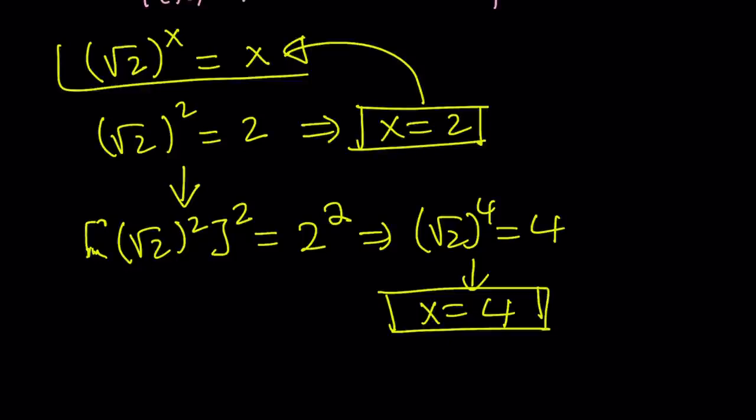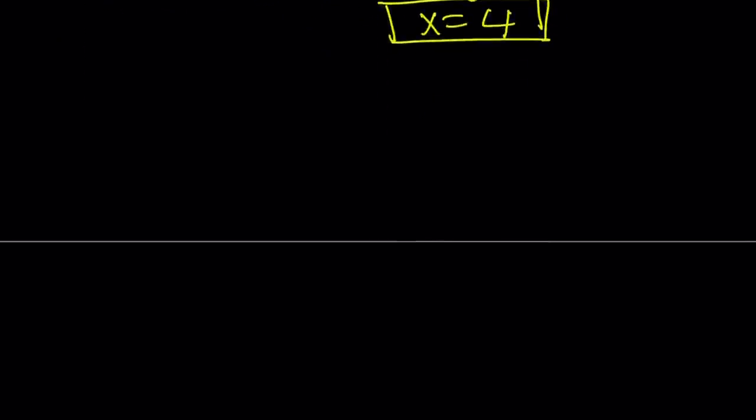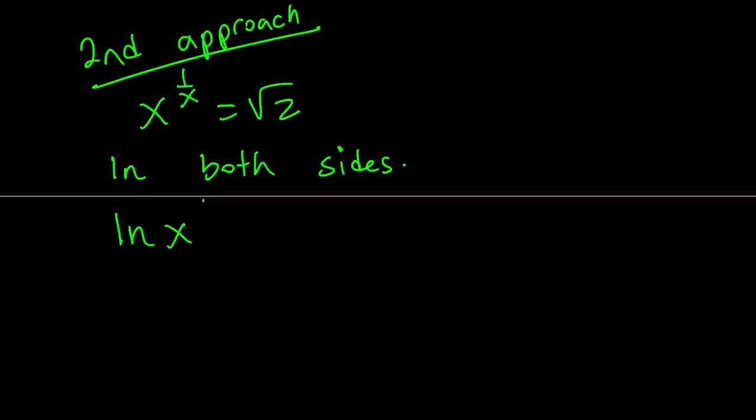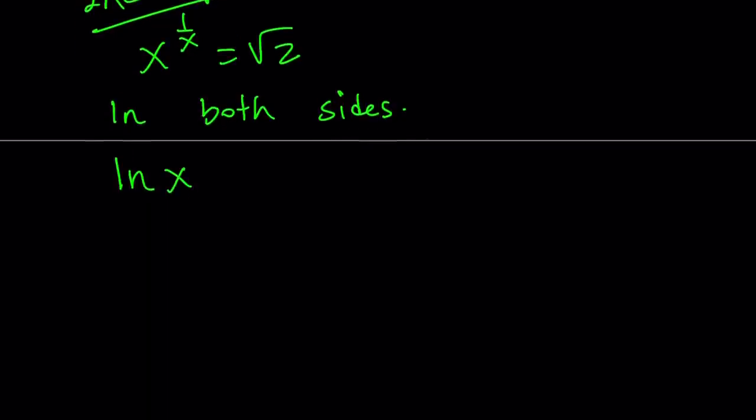Is that it? Yes. We'll take a look at the graph later on, but that should be all the solutions. Let's go ahead and take a look at the second approach. Now, my second approach is going to deal with the equation directly. I have x to the power of one over x equals square root of two. And when you have x or any function of x, a variable, in the exponent, it makes sense to get rid of the exponent because that's going to be kind of like a non-standard function. So, let's ln both sides, right? ln both sides to get rid of the exponent. So, if we do ln x to the power of one over x, that didn't look very good. So, we have ln x to the power of one over x equals ln square root of two.